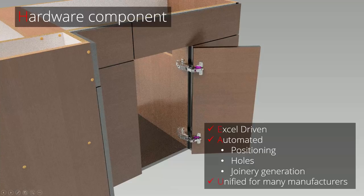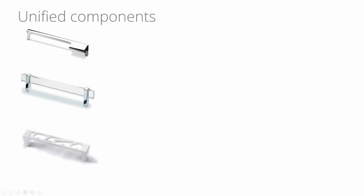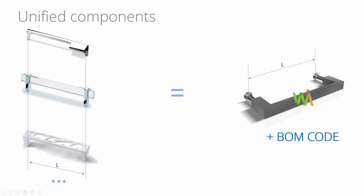Finally, you can significantly reduce the amount of components in your library, since one unified component can replace many components of the same type. On the left, we have different handles that have a similar drilling scheme, so at the design stage all of them can be replaced with a single handle from a Woodwork for Inventor library. However, you must know which one will be used during final assembly — to do this, you indicate the code and the name, and once that's done, it's basically enough for production.